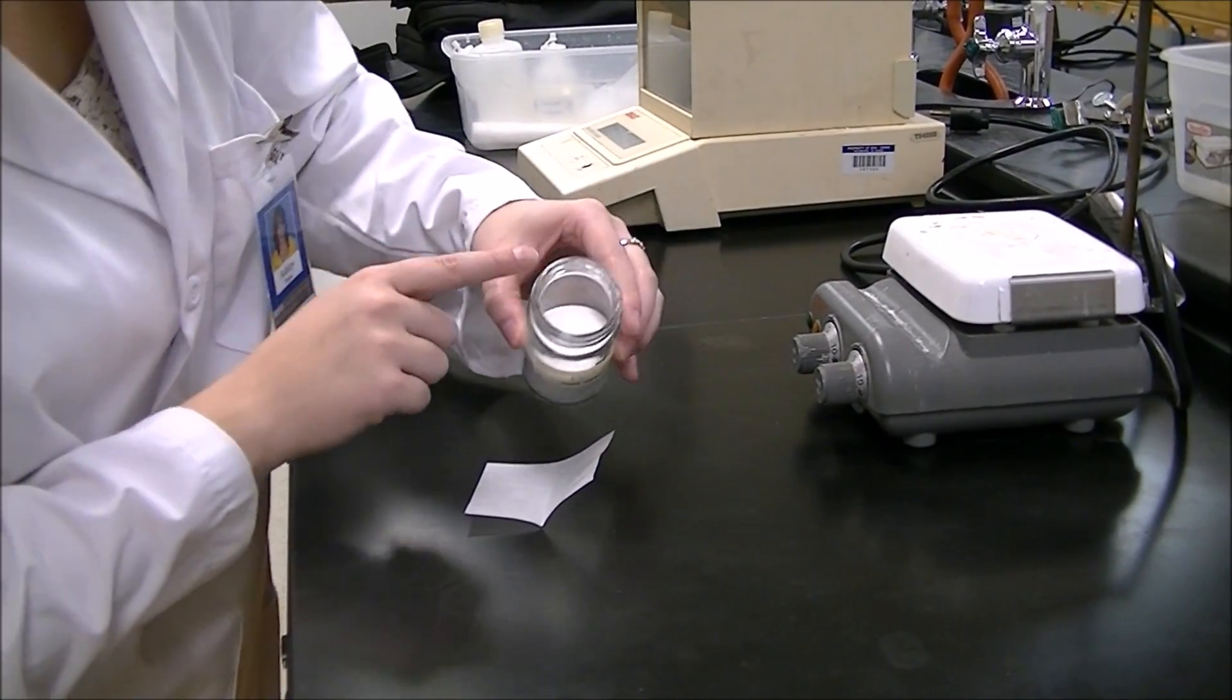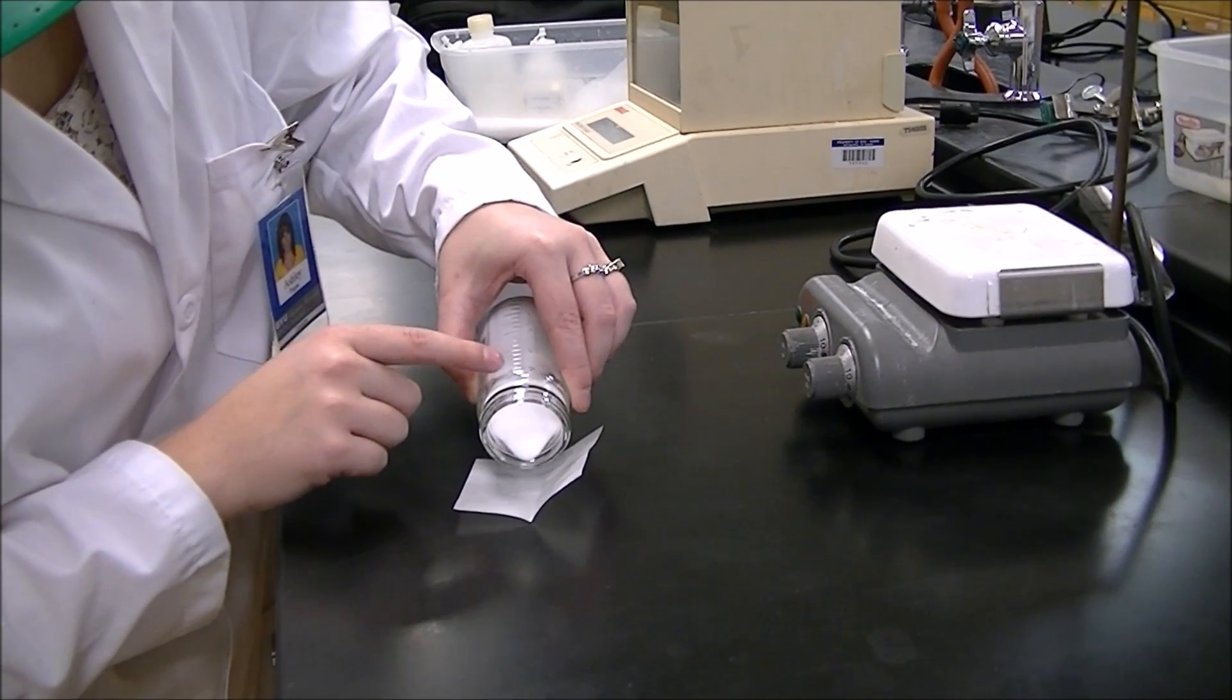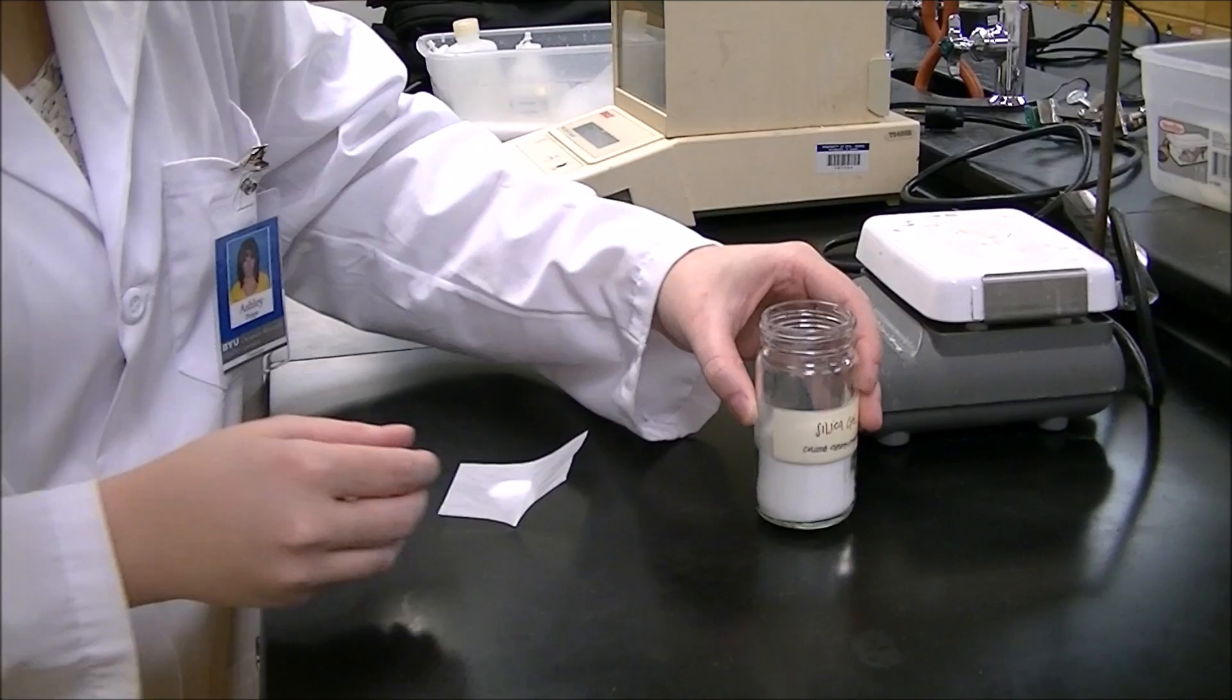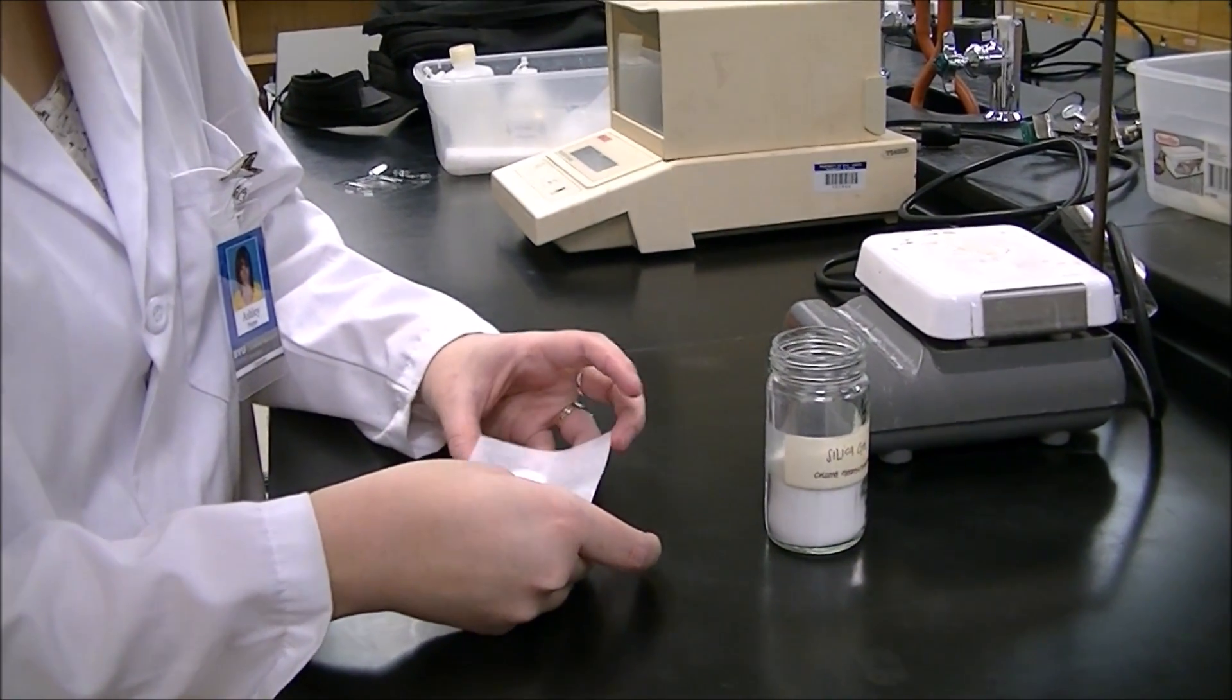Fill your column two thirds of the way up with silica gel. You want to leave about an inch worth of space left at the top. And be careful not to spill or inhale any of the silica.